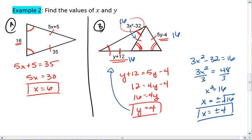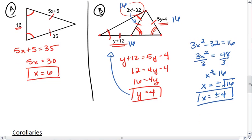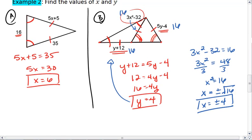It is important to realize that x is plus or minus 4, because positive 4 squared equals 16, and negative 4 squared also equals 16.